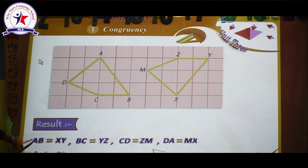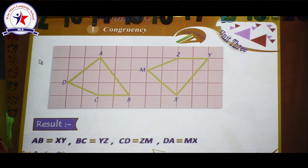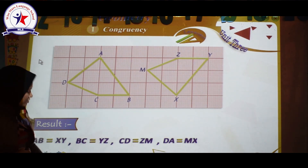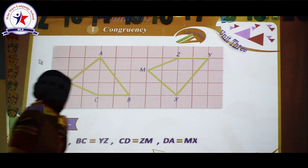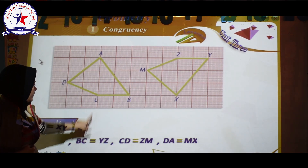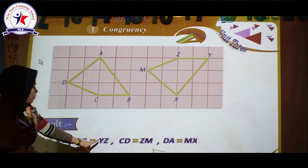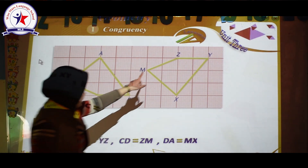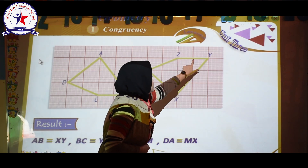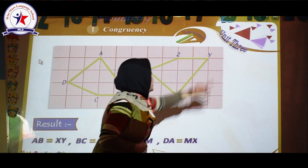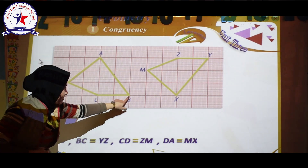Here AB is exactly the same as XY, and also the length of BC is exactly the same as YZ. The length of YZ is two units and also the length of CB is two units.